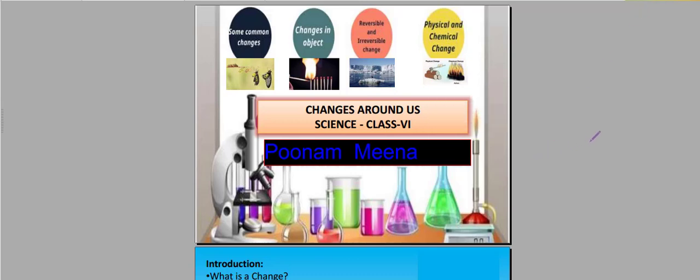Hello students. Today we are going to start our Chapter 6. Our chapter name is Changes Around Us. This chapter means changes around us, that means in your surroundings, in your four sides.